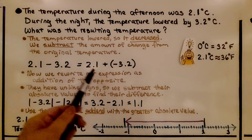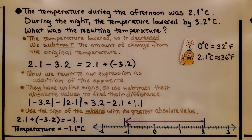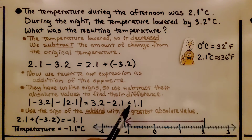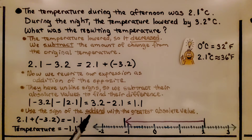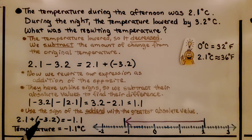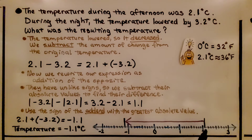They have unlike signs, so we subtract their absolute values to find their difference. It's equal to 1.1. We use the sign of the addend with the greatest absolute value. Negative 3.2 is farther from 0 than 2.1, so we use the negative sign: negative 1.1. The resulting temperature was negative 1.1 degrees Celsius. We went from 2.1, took away 3.2, and landed at negative 1.1.